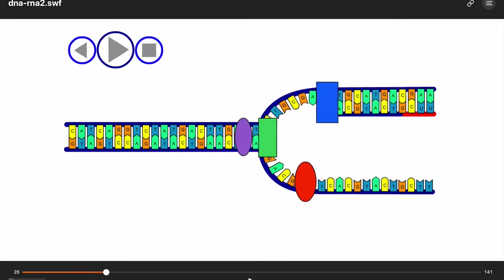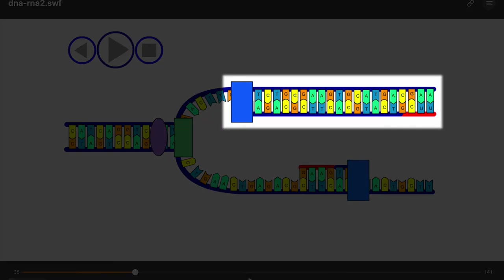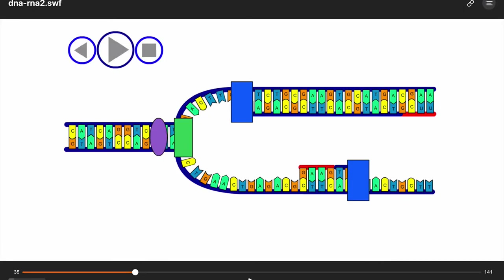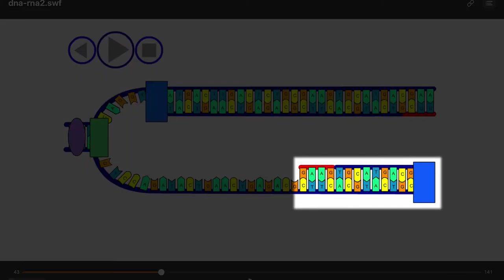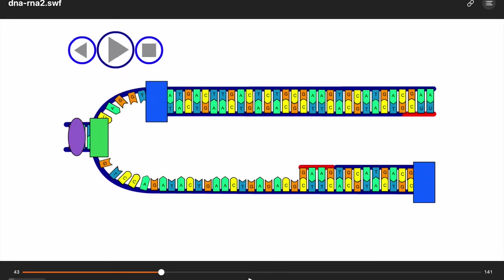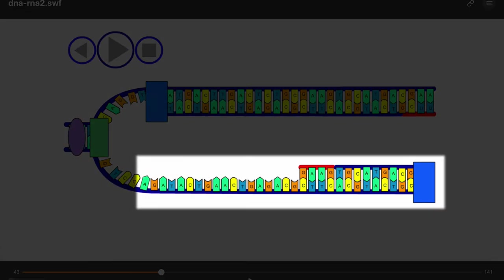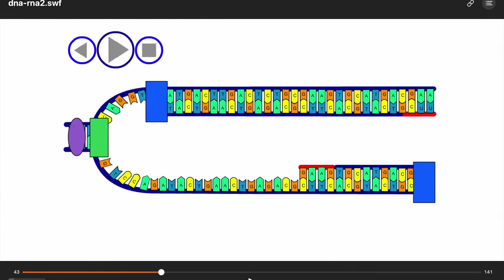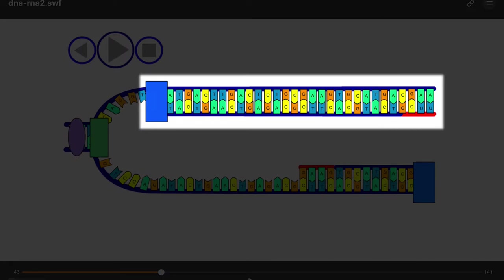As you can see here, the DNA polymerase builds a new DNA strand while moving to the left here. But, because of the chemical structure of the DNA molecule, the DNA on the other strand must be built backward. Because of this, the strand down here is called the lagging strand, while the one on the top is called the leading strand.